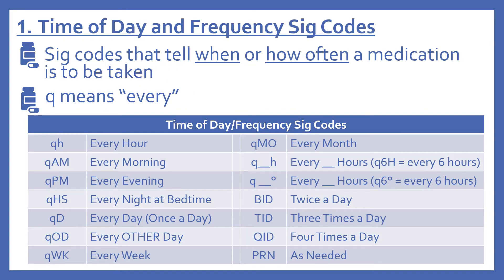First I'll begin with the time of day and frequency SIG codes. These SIG codes tell when or how often a medication is to be taken. Q means 'every' — you often see that in these type of SIG codes. So QH means every hour, QAM is every morning, QPM is every evening, QHS means every night at bedtime, QD means every day or once a day, QOD means every other day, QWK or QW means every week, QMO means every month. Q with a number and an H means every however many hours — for instance, Q6H would mean every six hours. Q with a number and a degree sign means the same thing, so Q6° would mean every six hours.